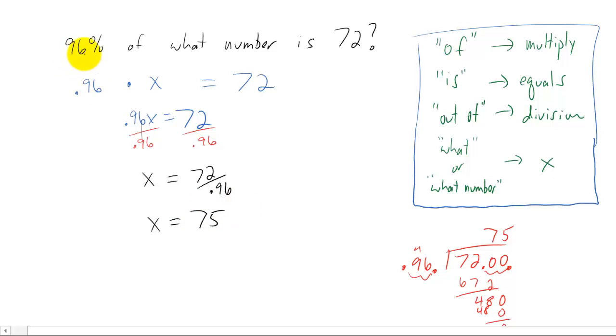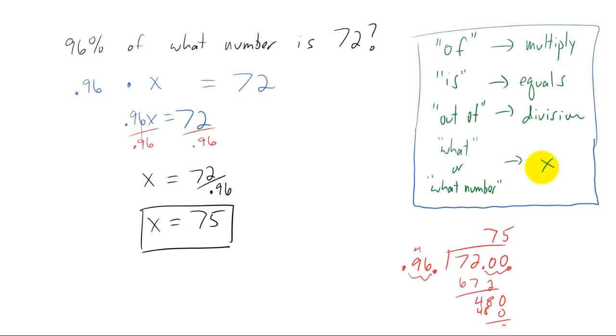Let's make sure that makes sense. 96% of 75 is 72. I think that does make sense. So I'm going to box it up and call that an answer. Let's try one more.